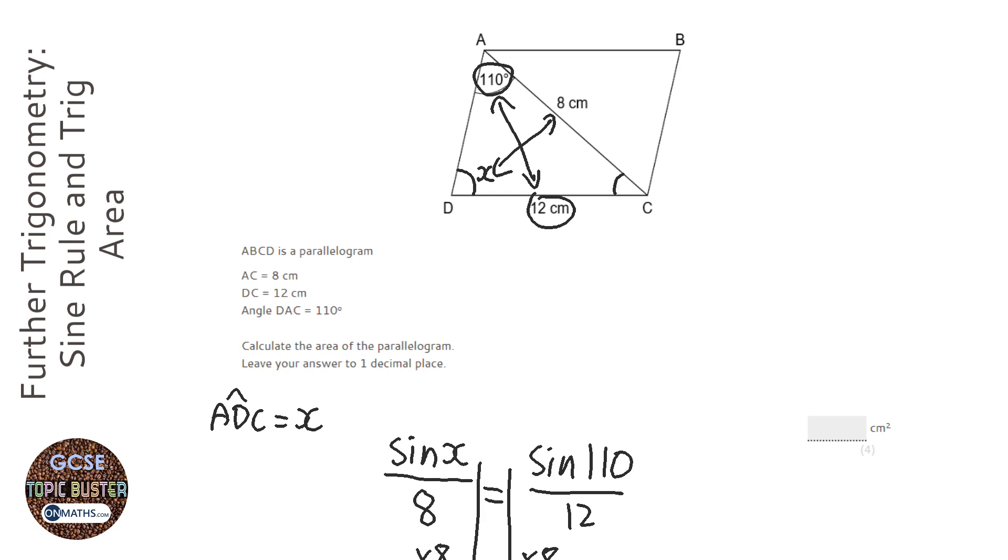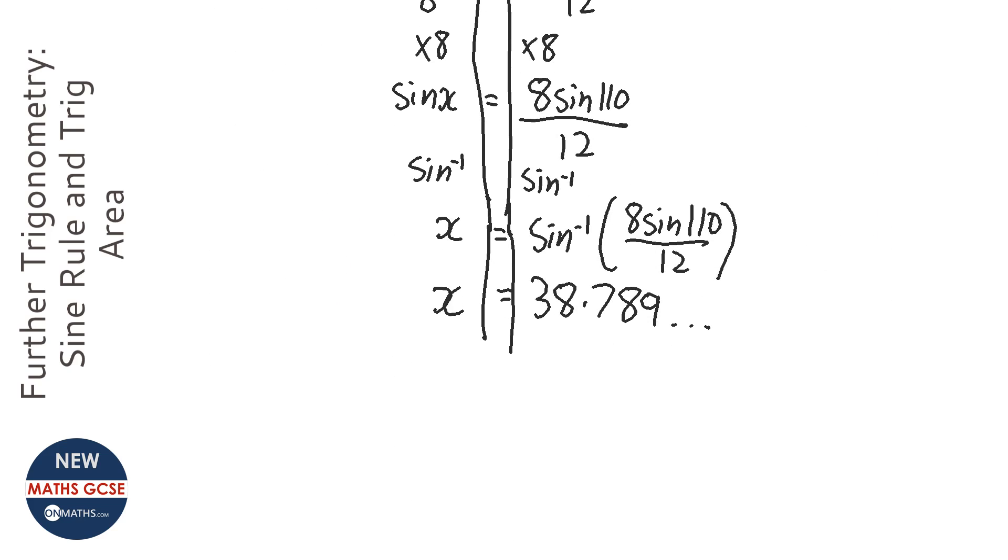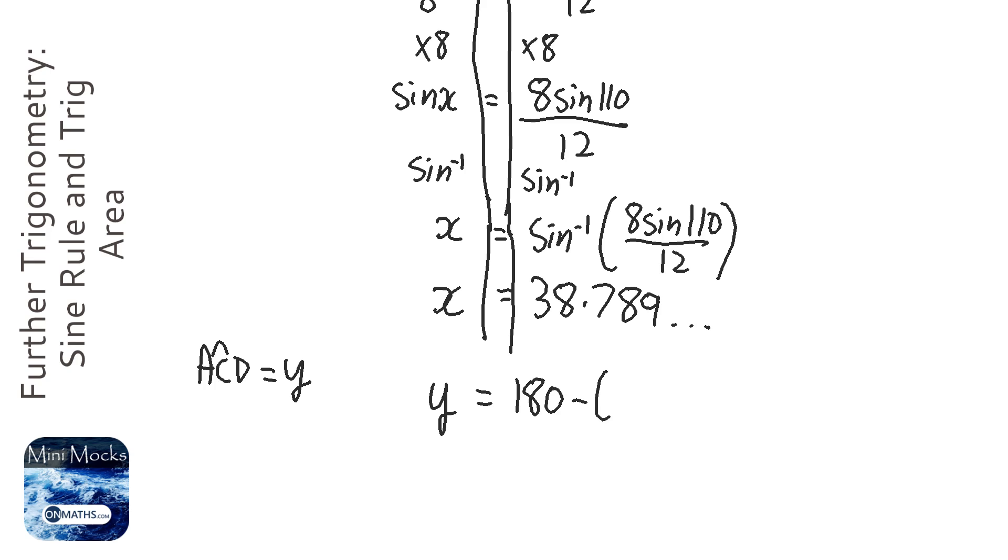Then what I'm going to do is add that to the 110 to work out what this angle here is, and I'm going to call that Y. So what is this? ACD. So I'm going to tell the examiner that ACD I'm going to call as Y just to make it a bit easier. So Y equals 180 take away 38.789 blah blah blah plus 110. So I'm going to add 110 to that, then I'm going to type in 180 take away the answer.